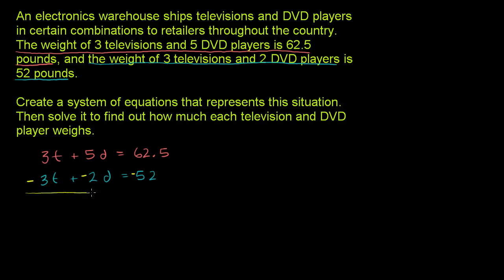Let's add these two equations. Remember, all we're doing is adding the same thing to both sides of this top equation. We're adding essentially negative 52 now that we've multiplied everything by negative 1. So let's add this left-hand side over here. The 3T and the negative 3T will cancel out. 5D plus negative 2D is 3D. So you have 3D equals 62.5 plus negative 52, or 62.5 minus 52 is 10.5.